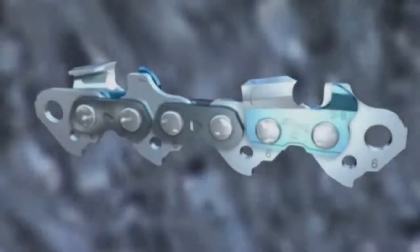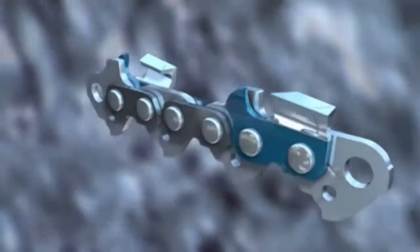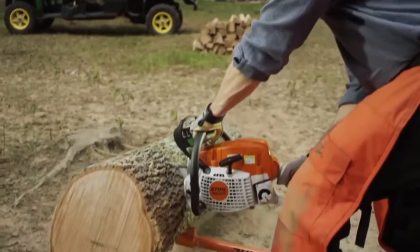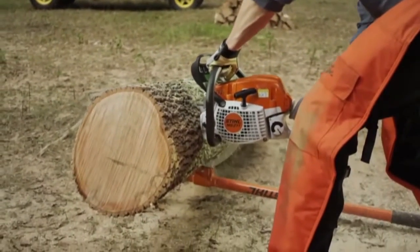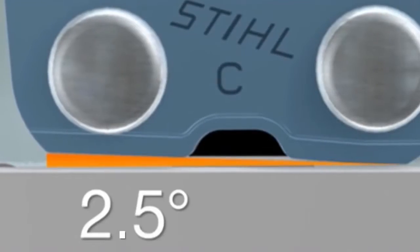STIHL has developed humped drive links, which are deployed on low-kickback STIHL chainsaws. These drive links ensure that the cutting teeth will glide more smoothly into the wood. With some chain types, vibrations and an irritating chatter while sawing have been significantly reduced by beveling the sliding surface.